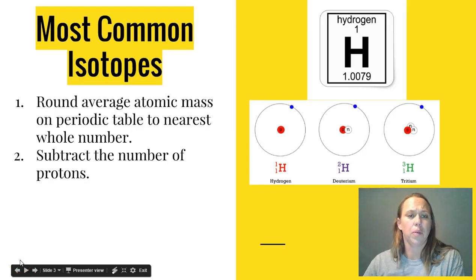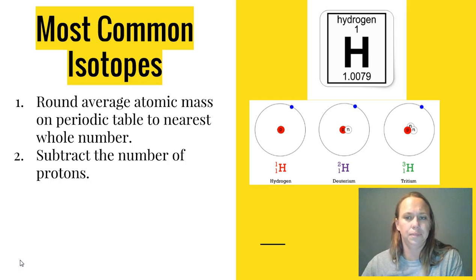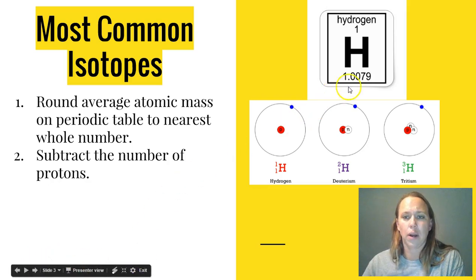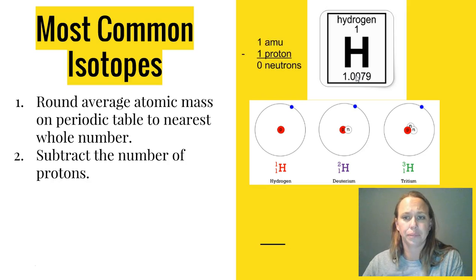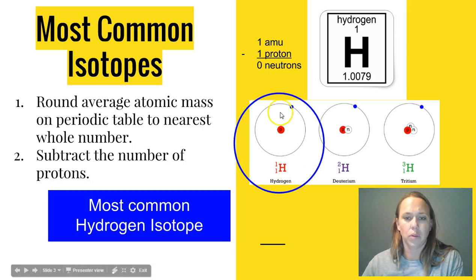We talked a little bit about the most common isotopes in the first video, but here it is again in a little bit more detail. To figure out the most common isotopes of an atom in the world, you need to take your average atomic mass on the periodic table, round it to the nearest whole number, subtract the number of protons, and that will leave you with the number of neutrons that most atoms will have. So when you look at these three isotopes of hydrogen, this one is the most common isotope for hydrogen because it has zero neutrons, which is the closest to the average atomic mass.